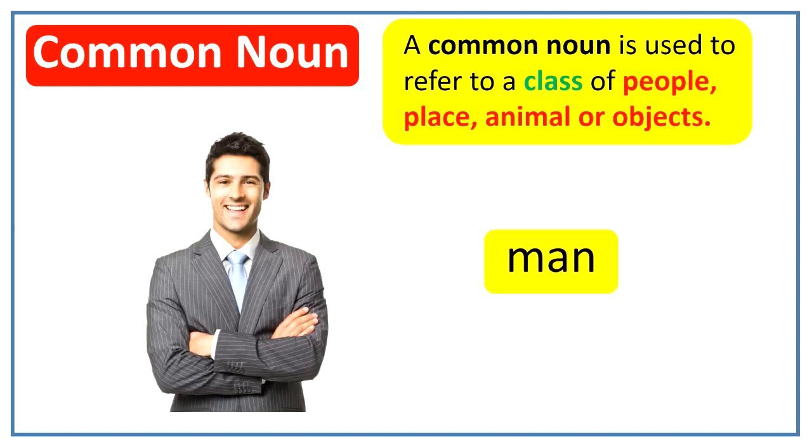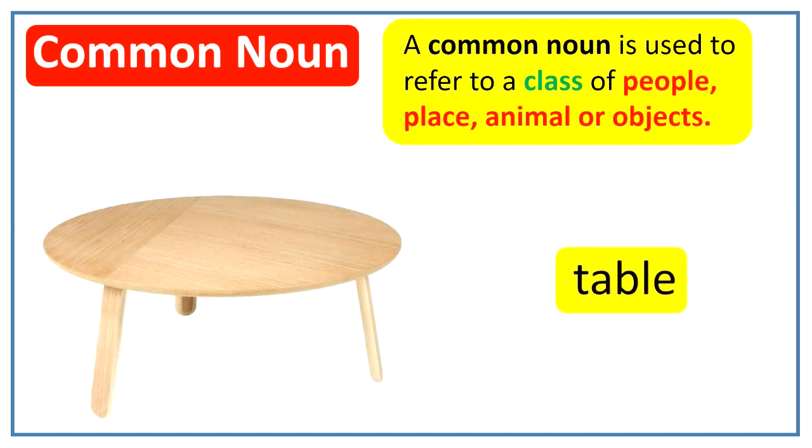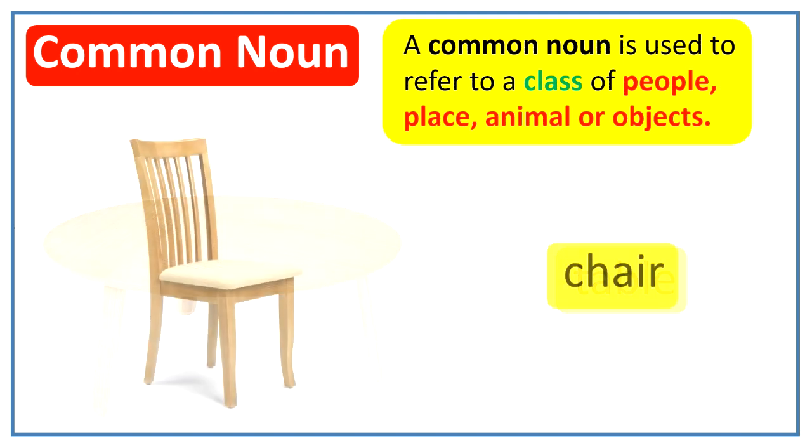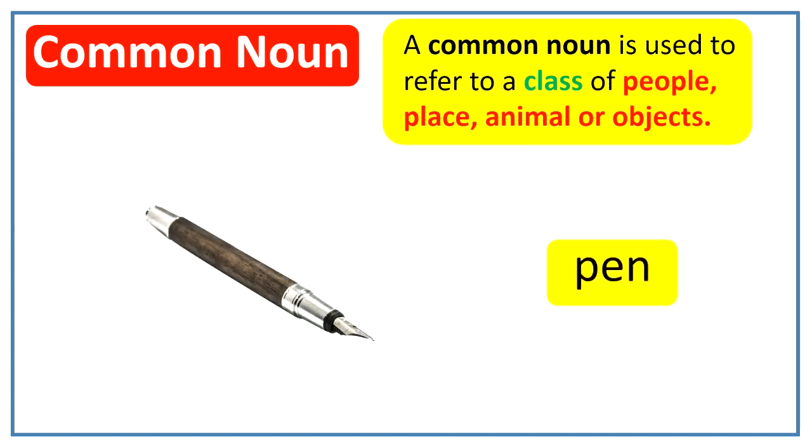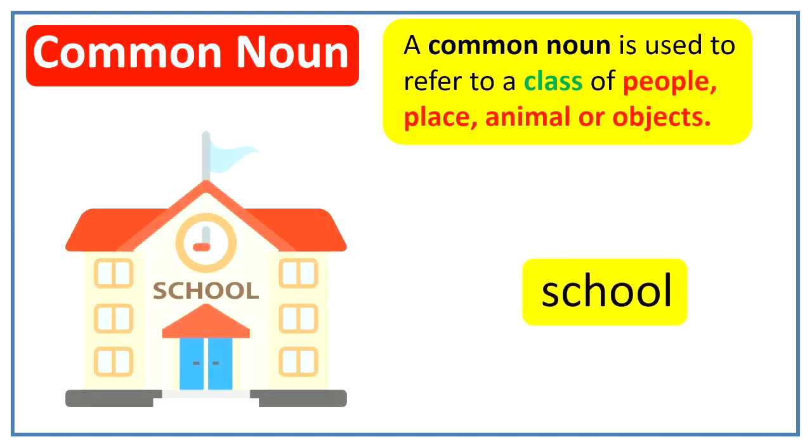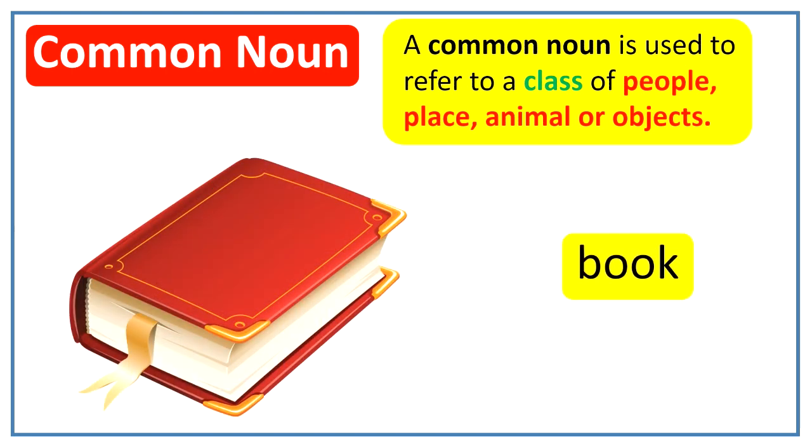For example, man, table, chair, market, pen, school and book. These all nouns refer to class of people, place, animal or objects.